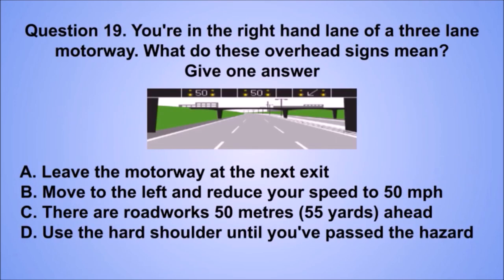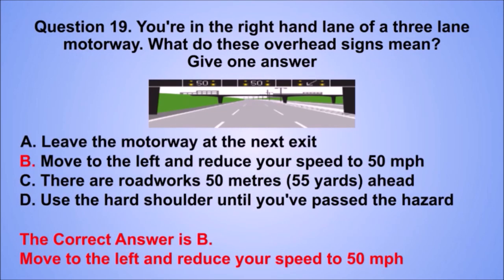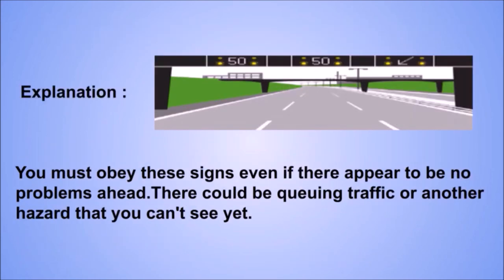Question 19. You're in the right-hand lane of a three-lane motorway. What do these overhead signs mean? The correct answer is B: Move to the left and reduce your speed to 50 miles per hour. You must obey these signs even if there appear to be no problems ahead — there could be queuing traffic or another hazard that you can't see yet.